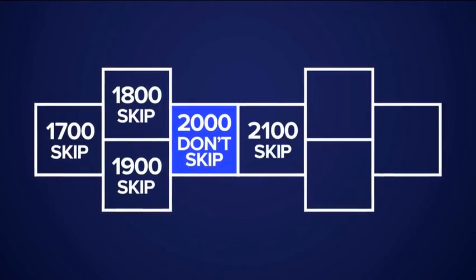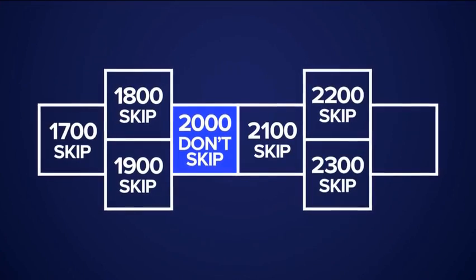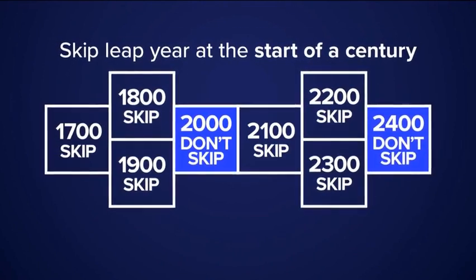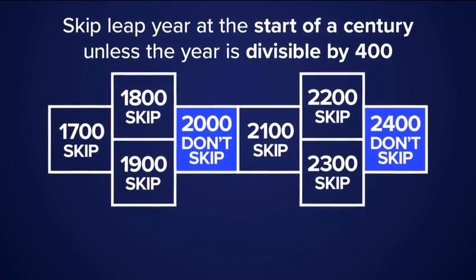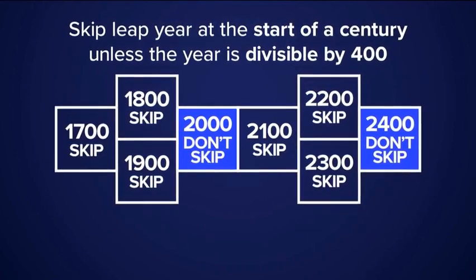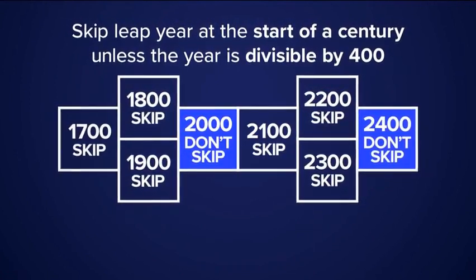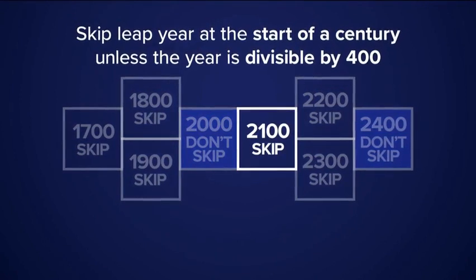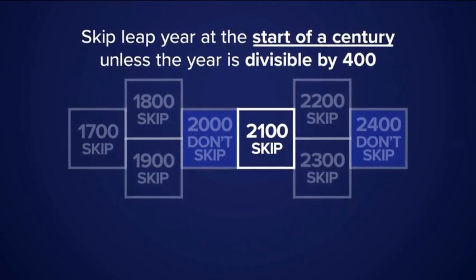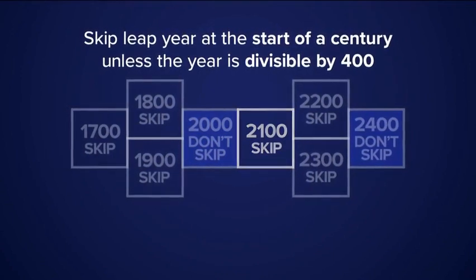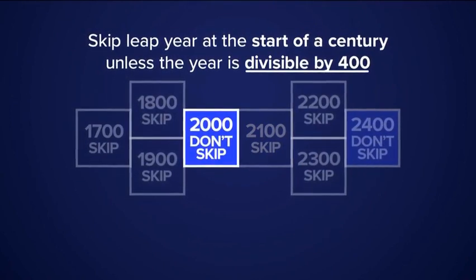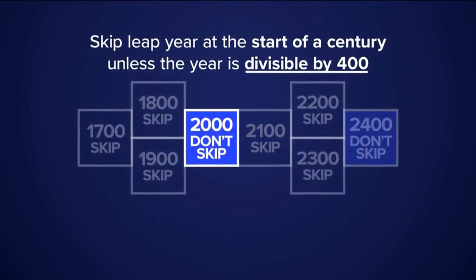To help understand this, we can use leap year hopscotch. You skip a leap year if it falls on the start of a century, unless that year is divisible by 400. So every four years we acknowledge the extra day in February. But in the year 2100, we will skip that leap year since it falls on the start of a century and is not divisible by 400. Back in the year 2000, that was a leap year, but since it was divisible by 400, we did not skip it.